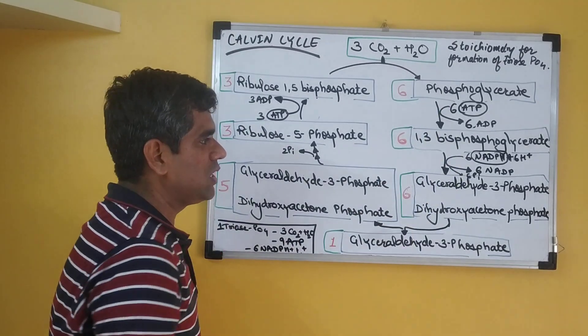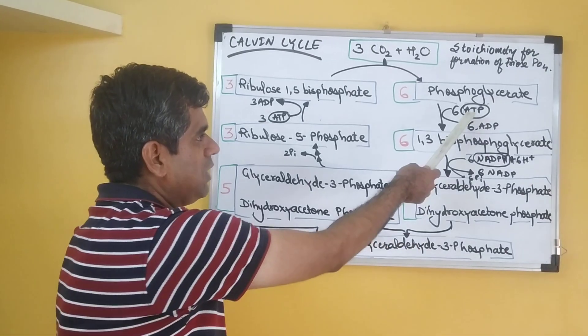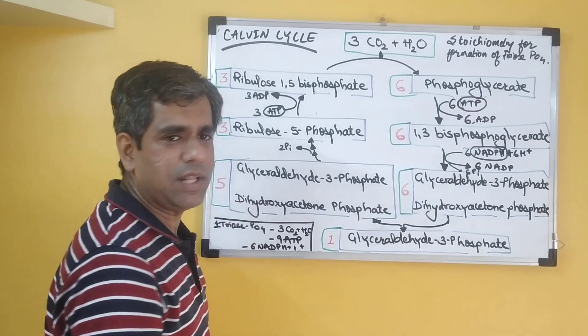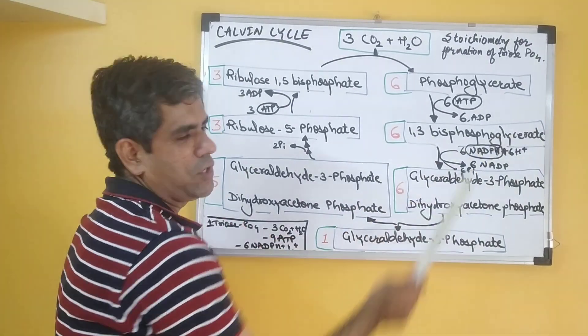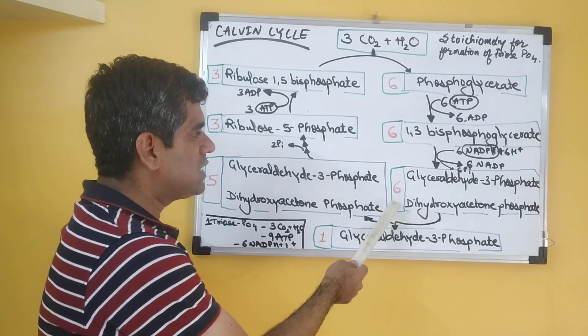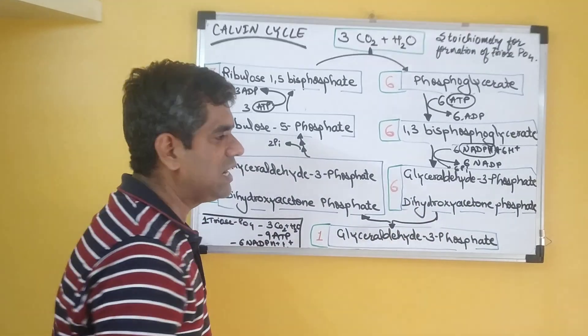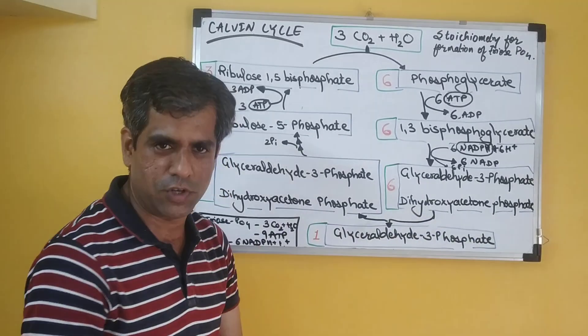This then undergoes reduction. First, it undergoes phosphorylation with ATP. So six molecules of ATP donate their phosphate group to form six molecules of 1,3-bisphosphoglycerate. This is then reduced with six molecules of NADPH to form six molecules of glyceraldehyde-3-phosphate, which isomerizes with dihydroxyacetone phosphate.